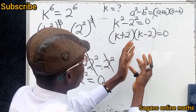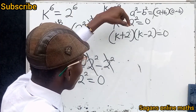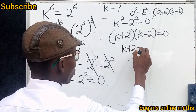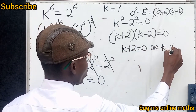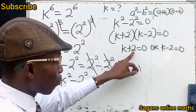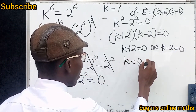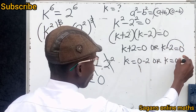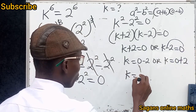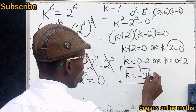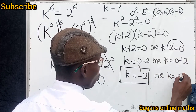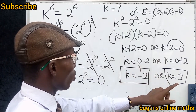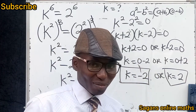When a product of two terms equals zero, each of them individually equals zero. So k + 2 = 0 or k − 2 = 0. Subtracting 2 from both sides gives k = −2, and adding 2 to both sides gives k = +2. So k equals minus 2 or k equals 2 — those are our two solutions.